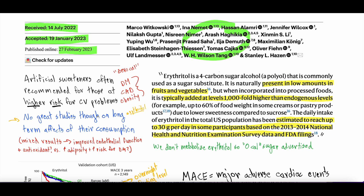The authors mentioned there haven't been a lot of great studies on the long-term effects of these artificial sweeteners, particularly erythritol. Although they're widely approved by the WHO, FDA, and European equivalents, the available studies had mixed results. Some small animal studies showed improved endothelial function and possible antioxidant effects. Other studies in young healthy volunteers showed increased central abdominal adiposity, and one small study showed increased risk for diabetes. But all of these were small studies — none were big, powerful, well-done studies.